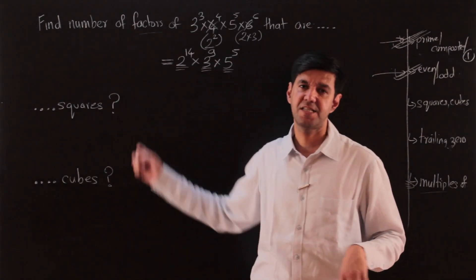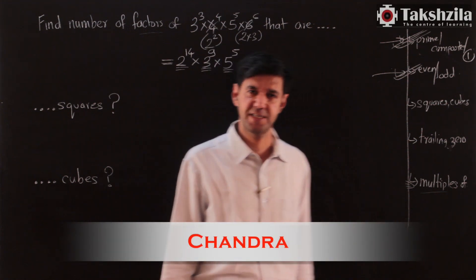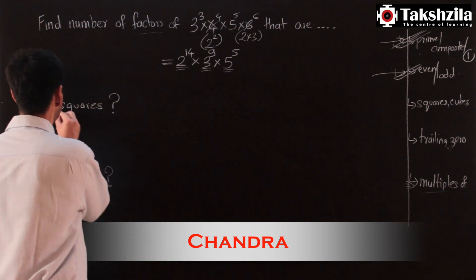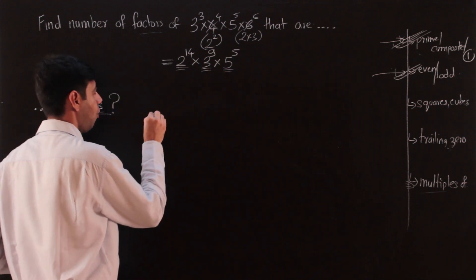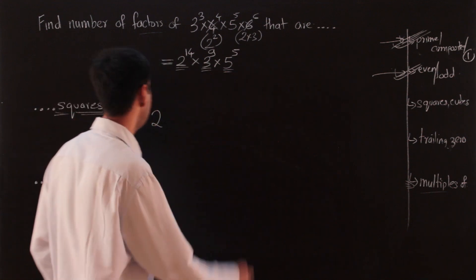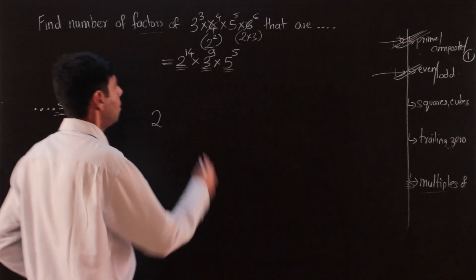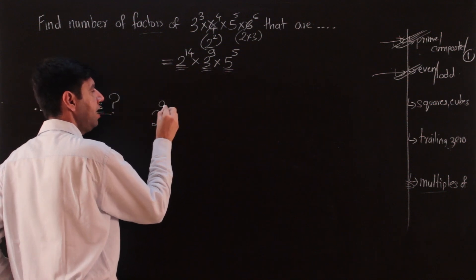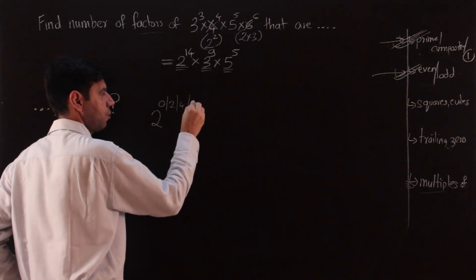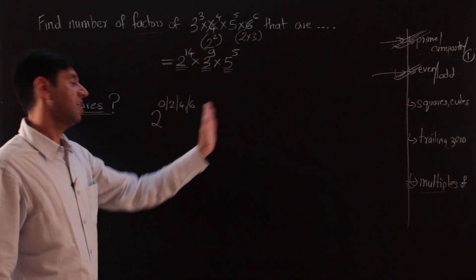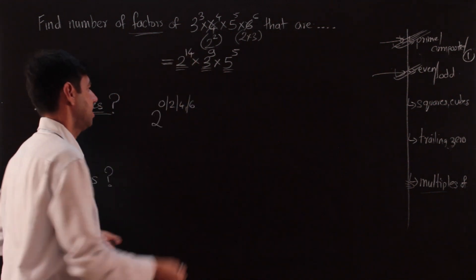The third set of conditions: how many factors are perfect squares, how many factors are perfect cubes? From a chapter on factorization, you should know that in the factorized form, a number is a perfect square only when the indices of the primes are multiples of 2. It can only be a square when the indices are 0, 2, 4, 6, and so on. But it also needs to be a factor, so there is a maximum limit.